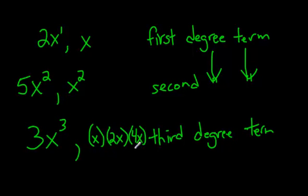This is a third degree term because if you took x times 2x times 4x, well, 2 times 4 is 8, and x times x times x is x cubed, and that is a third degree term. It's a bit of a tricky one. I just thought I'd throw it in there.